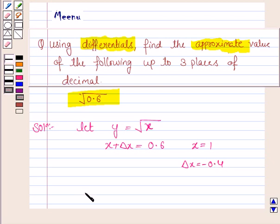Now we know that delta y is equal to f of x plus delta x minus f(x). Now f of x plus delta x is 0.6 minus f(x) that is under the root 1.